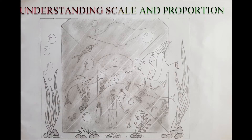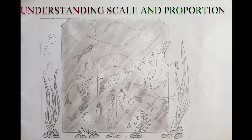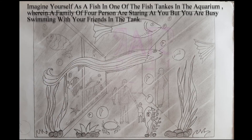The seventh topic is based on understanding scale and proportion, wherein you will be given a question stating: Imagine yourself as a fish in one of the fish tanks in the aquarium, wherein a family of four persons are staring at you and you are busy swimming with your friends in the tank. Sketch out a proportionate perspective view with scale.